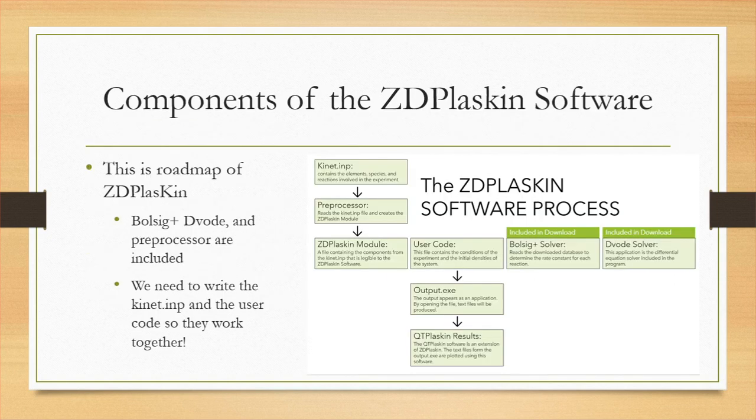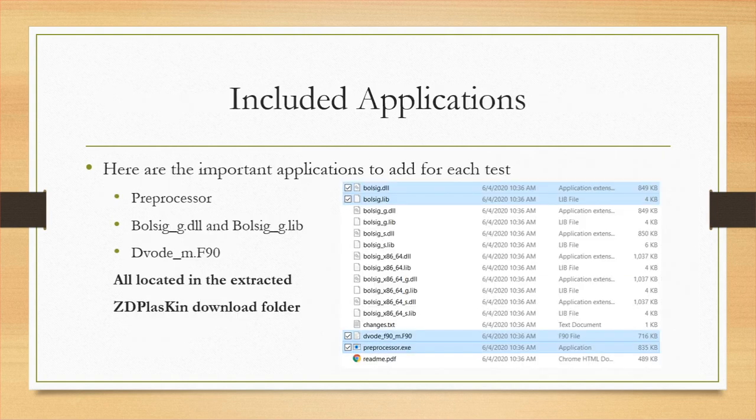Now let's walk through the entire ZD Plaskin process top to bottom. I have a roadmap that shows how all the components work together. First, I want to talk about the three things that are already part of the download: the preprocessor, the BULSIG solver, and the DVODE solver. In the ZD Plaskin folder that we downloaded and extracted, we need four components. The BULSIG solver includes both the BULSIG_G.DLL and the BULSIG_G.LIB, and for each experiment you'll want to copy and paste these into your experiment folder.